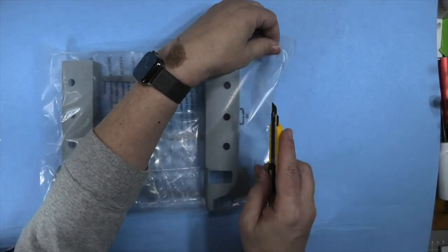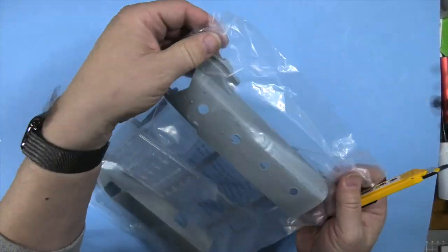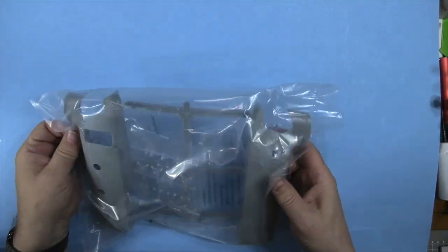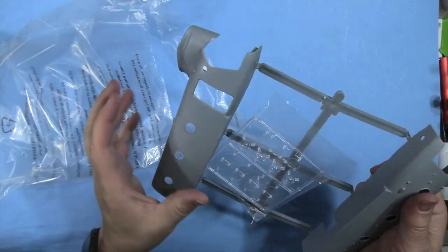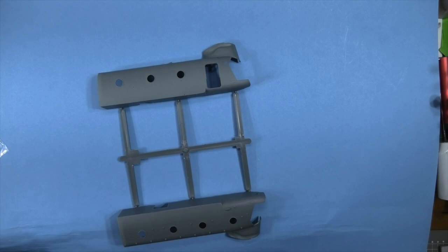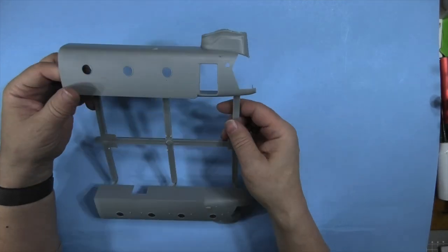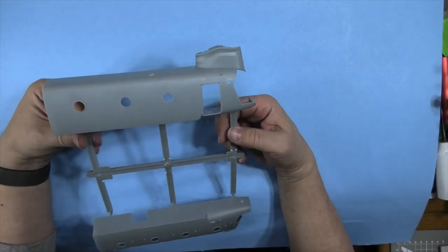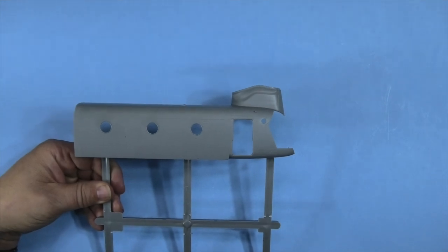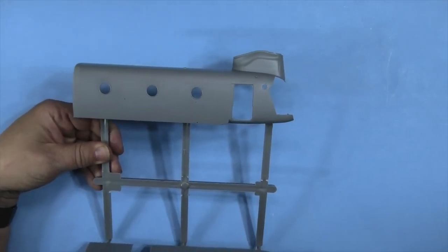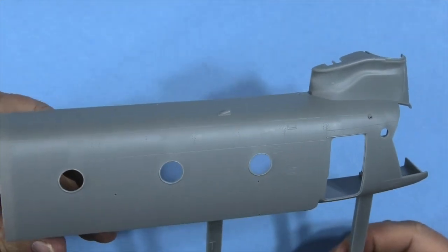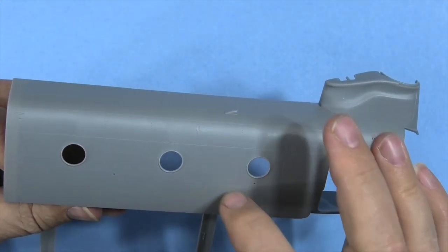The clear sprues are in here too, just three of those. We have your typical beautiful Hobby Boss plastic with some very nice rivet and recessed detail.